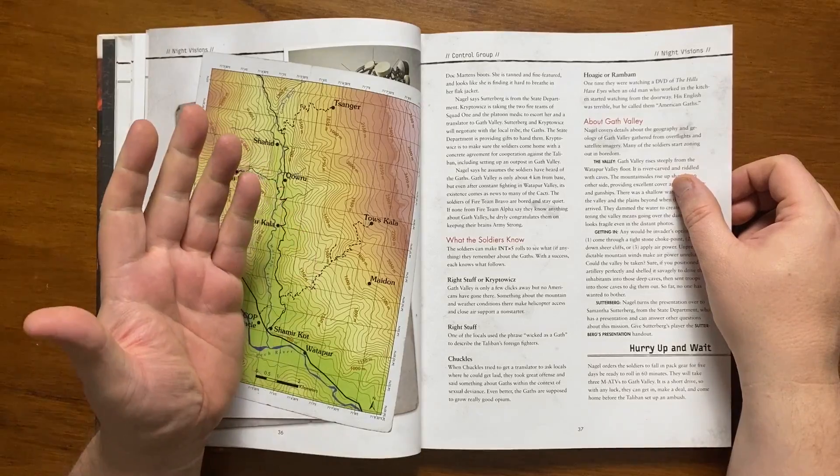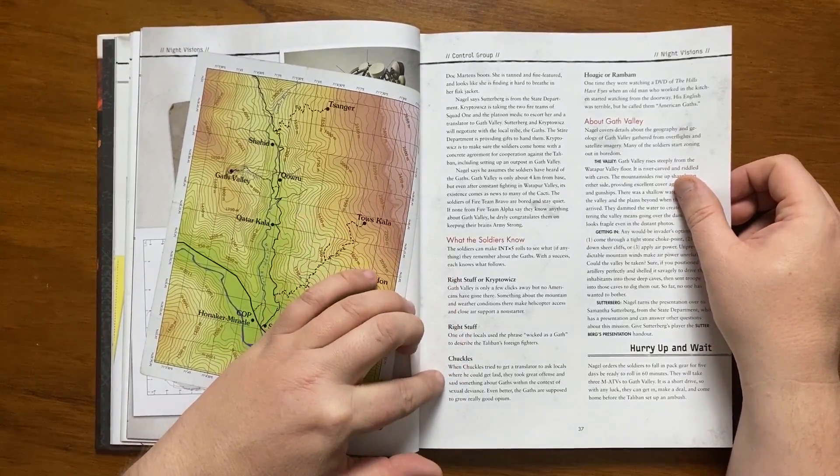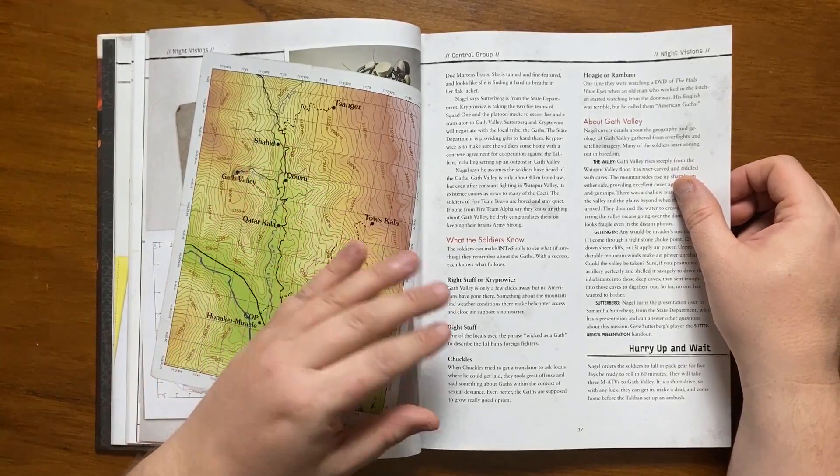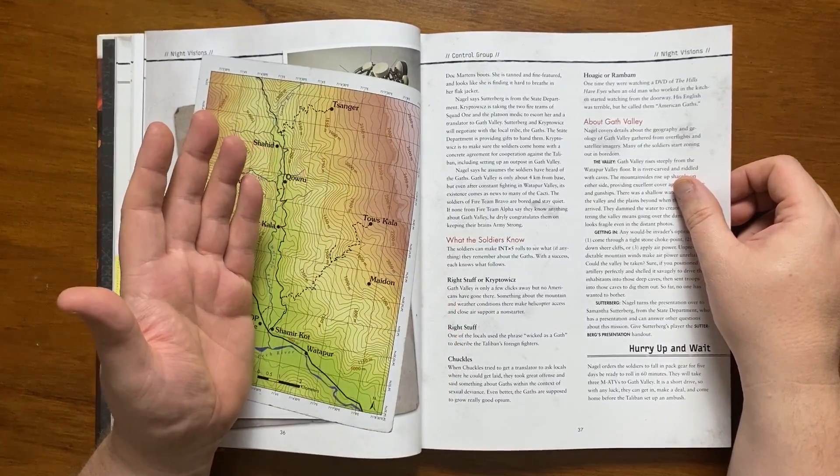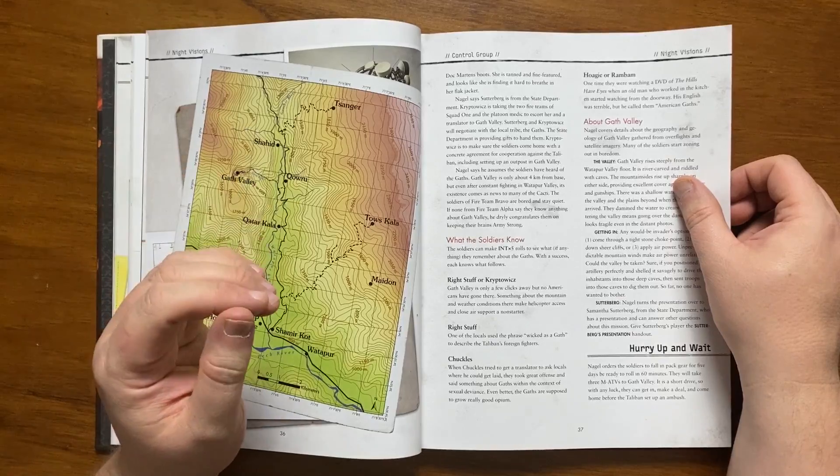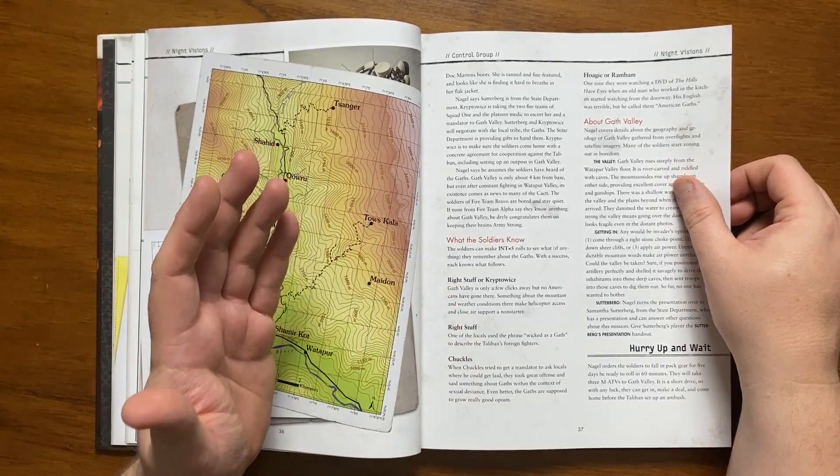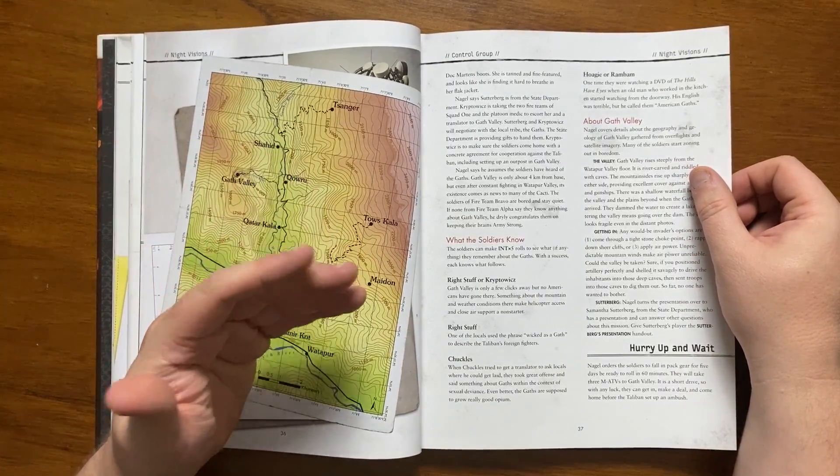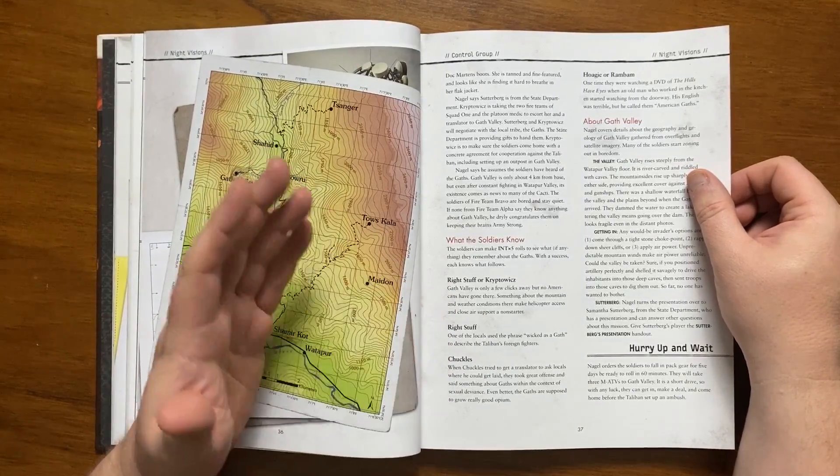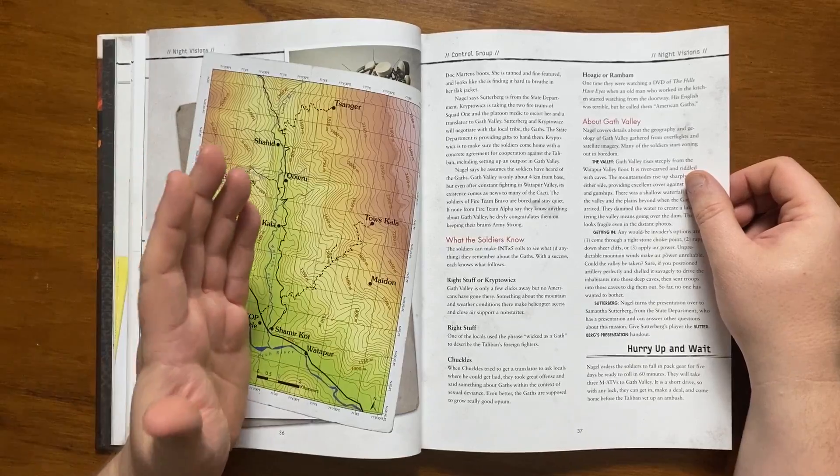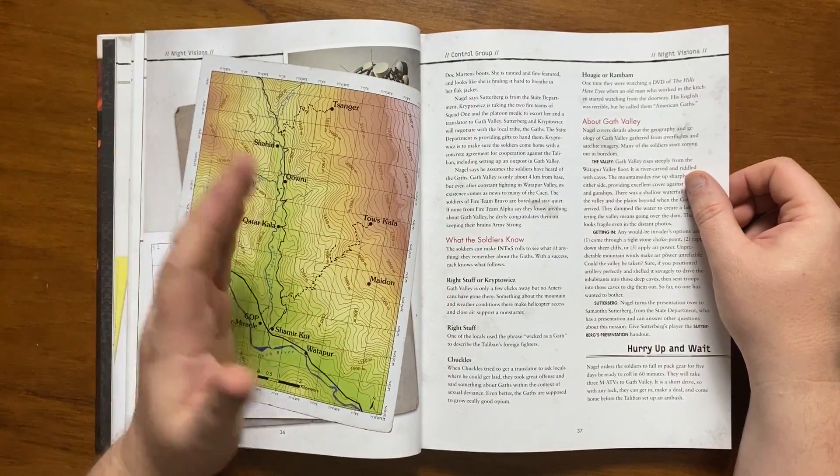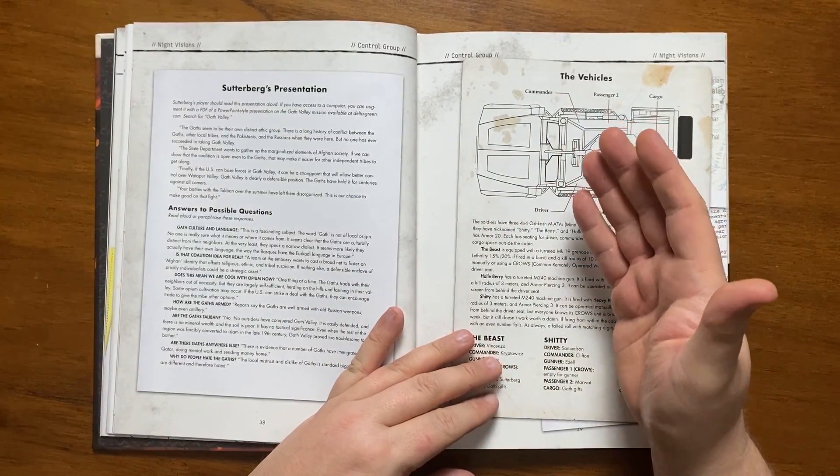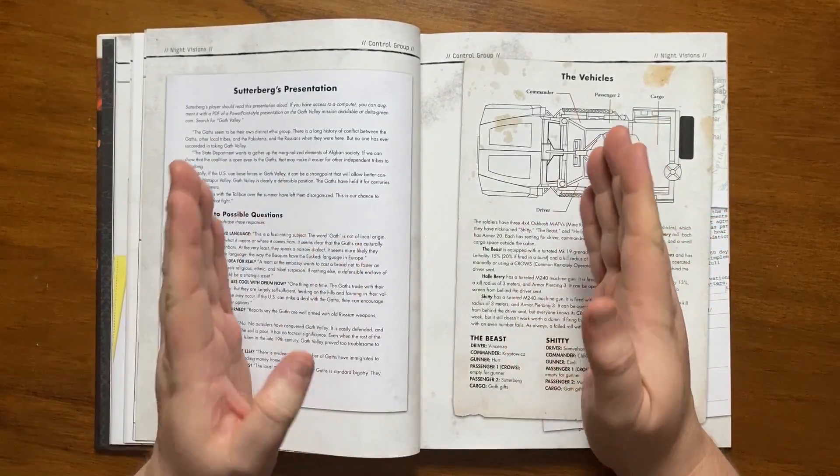The soldiers could potentially know a little bit about the Gath, and it details what each soldier can know. The general consensus is that they are sexual deviants, the valley has mountain winds that prevent air support, and that they are considered wicked, and in an American context, in the same ballpark as inbred hillbillies. They can find out that the valley is riddled with caves, and that a river flows through it, and that they have dammed it, making it extremely difficult to get into with the prevailing unpredictable mountain winds. The Gath have held the valley against all comers since time immemorial. Once all questions have been asked, they are told to pack gear for 5 days and be ready to roll in 60 minutes. They will take 3 MATVs to the valley, make a deal with them and get back before the Taliban can set up an ambush. The next section covers the kind of questions that Sutterberg could face, and the answers she can give.